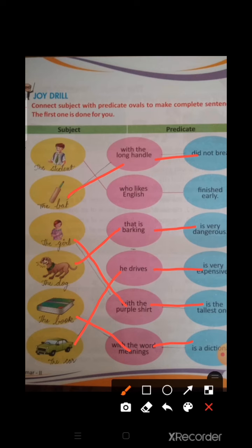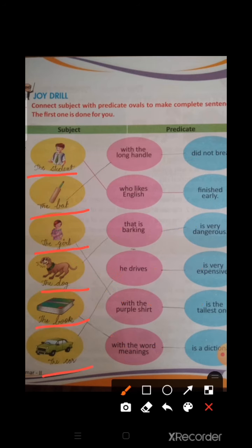We have to do this work like this. You will write the names in the subject part — the student, the bat, the girl, the dog, the book, the car. Now our lesson number 4 is complete and our first unit test portion is also complete. Students, you have to learn all the lessons and complete all your work. Thank you so much. Have a nice day.